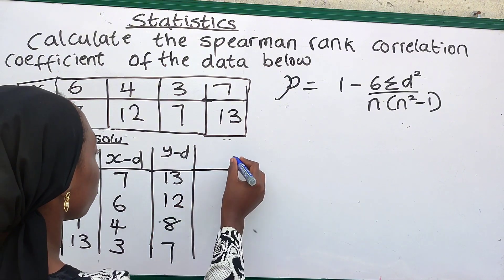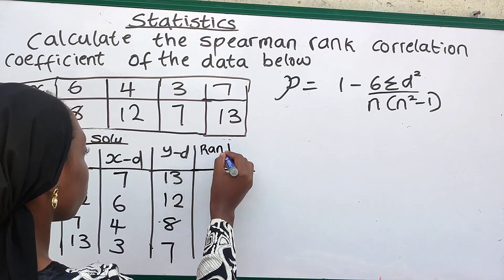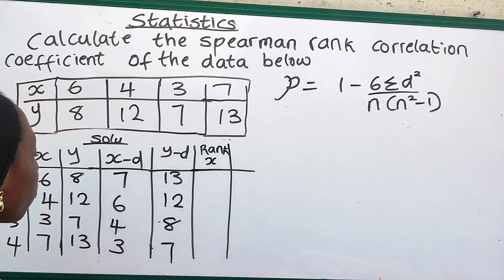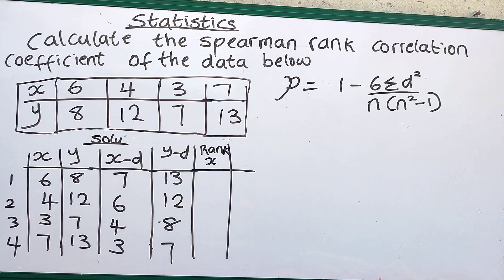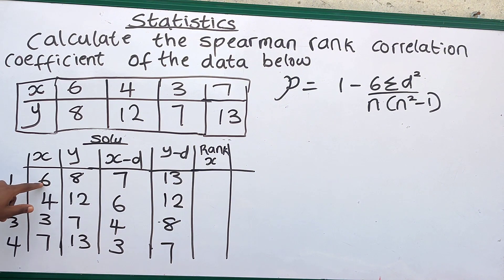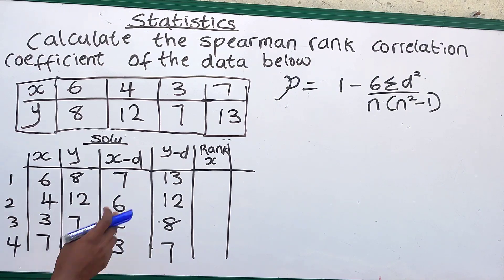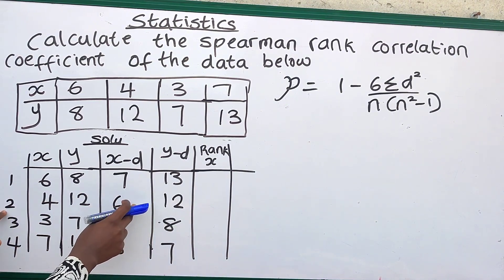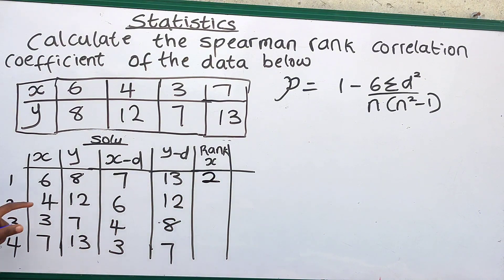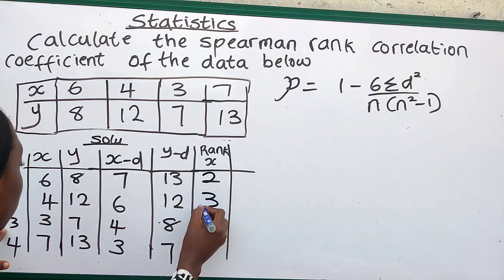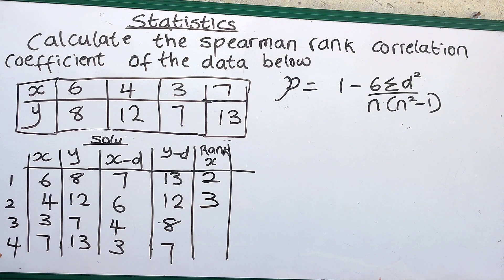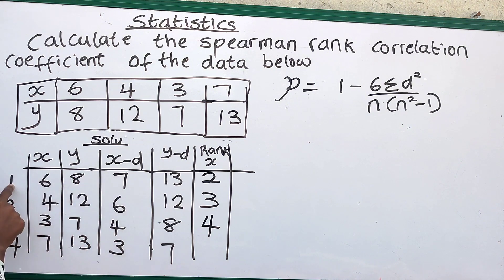Then after that we rank our X. How do we rank X? The first number we have for X is 6. What is the rank for 6 in descending order? 6 is in position 2, so we have rank 2. The second one is 4; its rank in descending order is 3. The next one is 3; its rank in descending order is 4. And the last one is 7; the rank for 7 in descending order is 1.